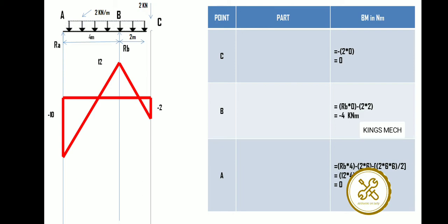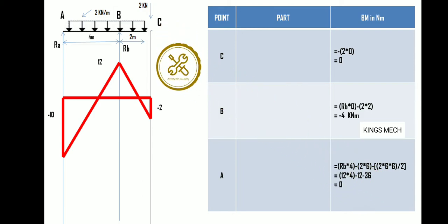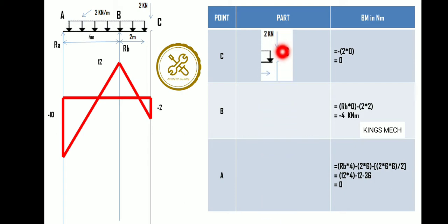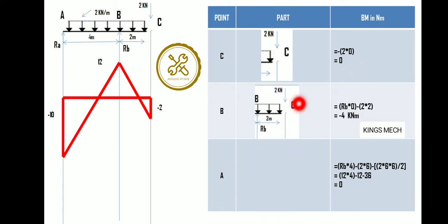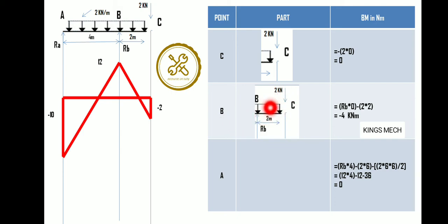Regarding the bending moment diagram, we have points C, B, and A. At point C: starting value is 2 × 0 = 0; at 2 m from C, the value is 2 × 2 = 4 (i.e., minus 4). RB's originating point is 0. The UDL starting and ending points give a value of practically 0. Then 2 × 2 = minus 4 — simple as that.